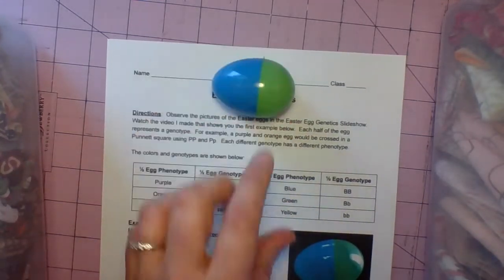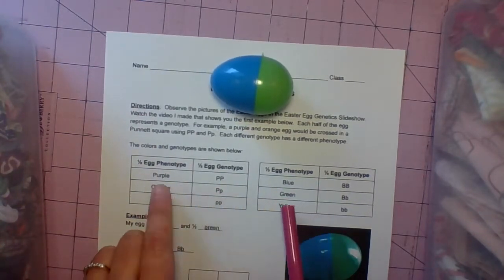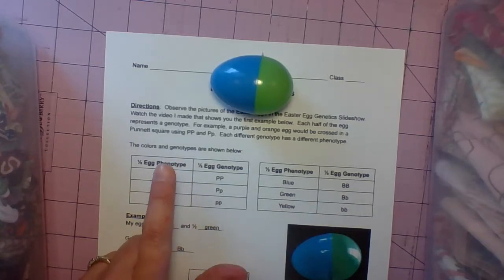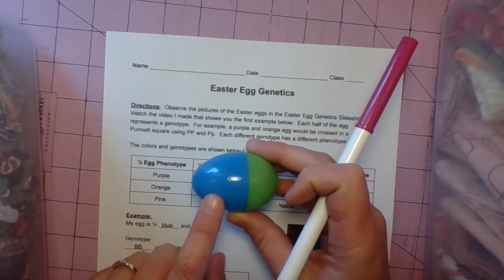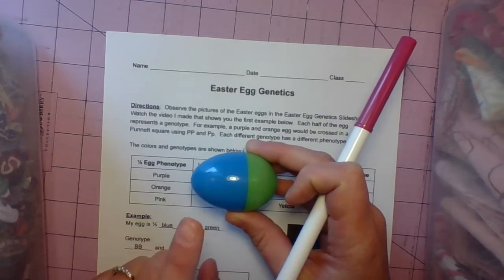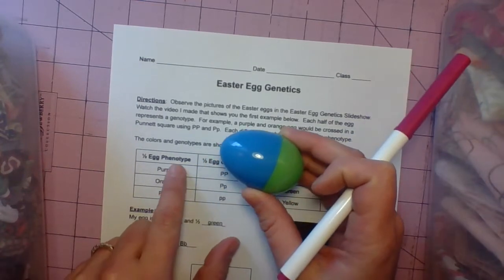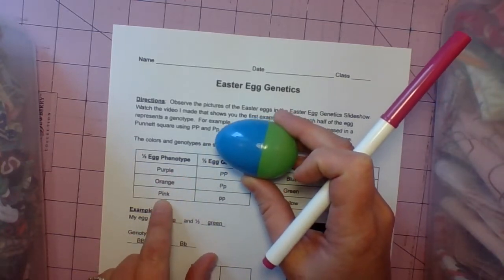Right here, this is something that you need to refer to for each of the problems. There's two different charts. On one side of the chart, it tells you the phenotype. That's a physical appearance. I can look at this Easter egg and this side is blue. That's a phenotype. I look at the Easter egg, I see it's blue. That's its physical appearance. The phenotype possibilities are purple, orange, and pink.